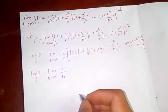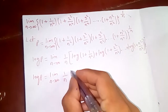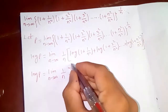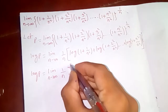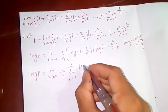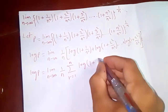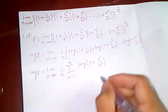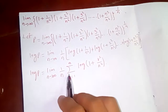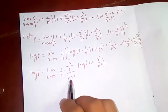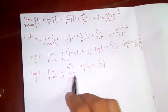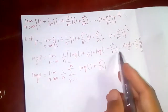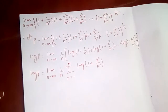So log p equals the limit as n tends to infinity of (1/n) times the summation from r = 1 to n of log(1 + r²/n²). This is exactly the same expression — if you put r = 1 you get the first term, r = 2 the second, up to r = n.